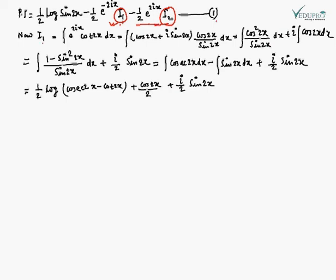I1 = ∫ e^(2ix) cot 2x dx = ∫ (cos 2x + i sin 2x)(cos 2x / sin 2x) dx. Multiplying inside, this is ∫ cos²2x / sin 2x dx + i ∫ cos 2x dx. Using cos²2x = 1 − sin²2x, the first integral becomes ∫ (1 − sin²2x)/sin 2x dx.